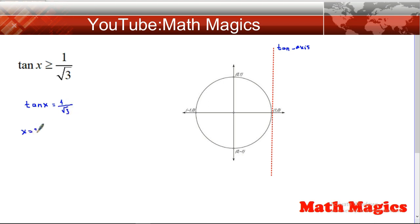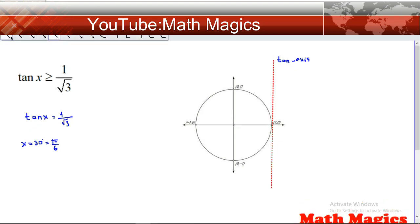It's 30 degrees, and 30 degrees can be written as π divided by 6. On the unit circle we have to find the region where tangent x is greater than 1 divided by square root of 3.